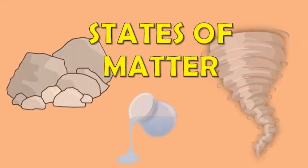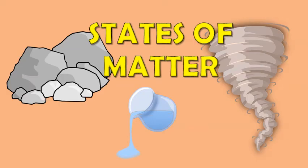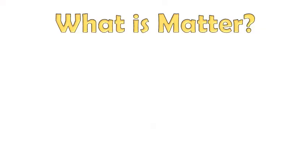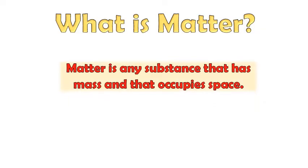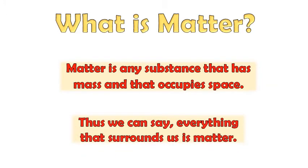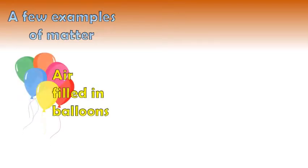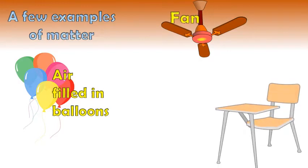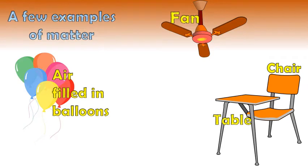States of matter. What is matter? Matter is any substance that has mass and occupies space. Thus, we can say everything that surrounds us is matter. A few examples of matter are air filled in balloons, fan, chair, and table.